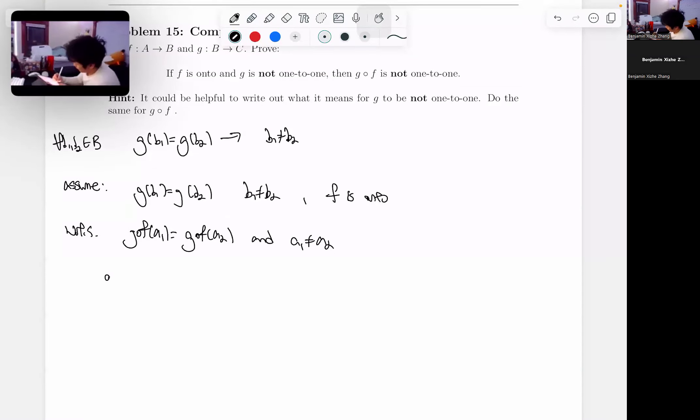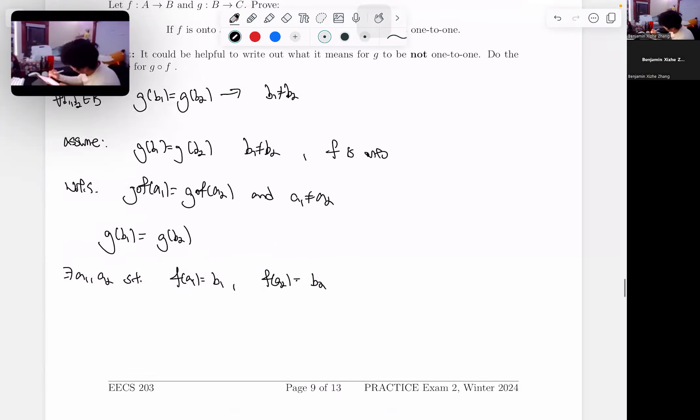Okay, so let's start with our assumption. g of b1 equals g of b2. We know f is onto, so there must exist an a1 and an a2, such that f of a1 equals b1, and f of a2 equals b2.